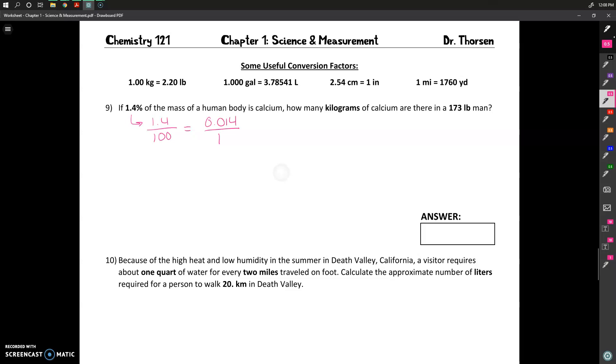Most of you, though, will probably be most comfortable with the first way that I represented this. Which is to just say that 1.4% means that I have 1.4 of something and 100 of something. And so if I'm writing it this way, let's talk about what those units would be.